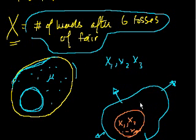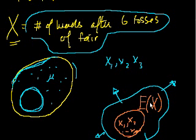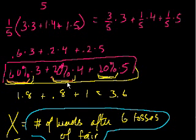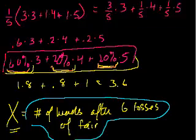The expected value of a random variable is the exact same thing as the population mean — in fact, it's sometimes called that. What makes it interesting is that here you have an infinite population, so you can't just add all the numbers and divide. But if you know the frequency of the numbers — 3 shows up 60% of the time, 4 shows up 20%, 5 shows up 20% — you can still calculate a mean, even with an infinite population. That's how expected value works.